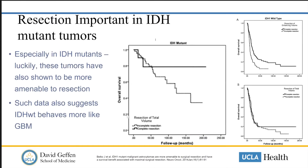More recently, when taking molecular factors into account, the presence of the IDH mutation identifies a group of tumors that behave better overall. But the concept of complete resection still bears importance here — these tumors tend to be more amenable to complete resection given their location and often circumscribed nature, and when a complete resection is performed, there is something akin to a cure, with some patients achieving really long-term survival.